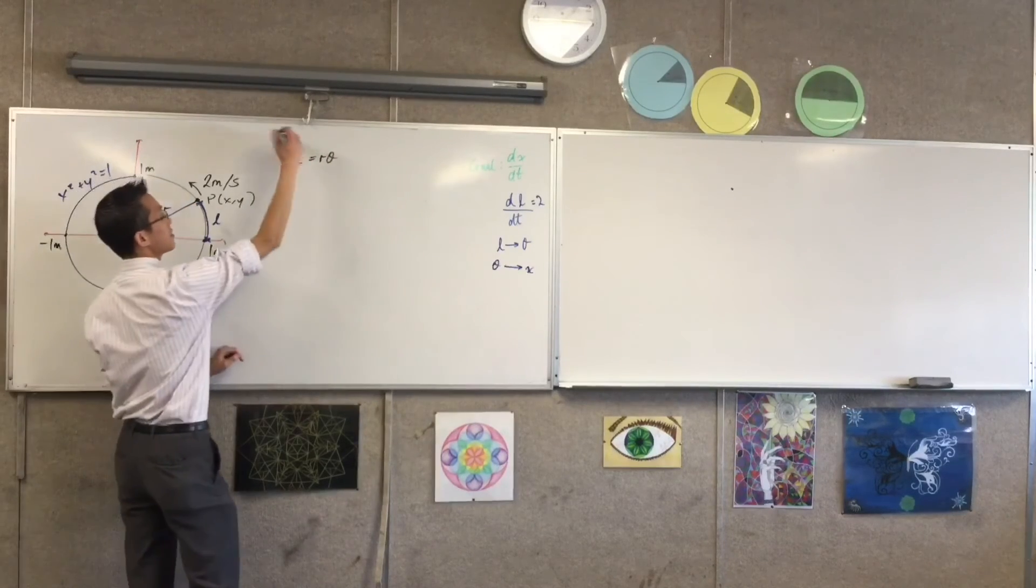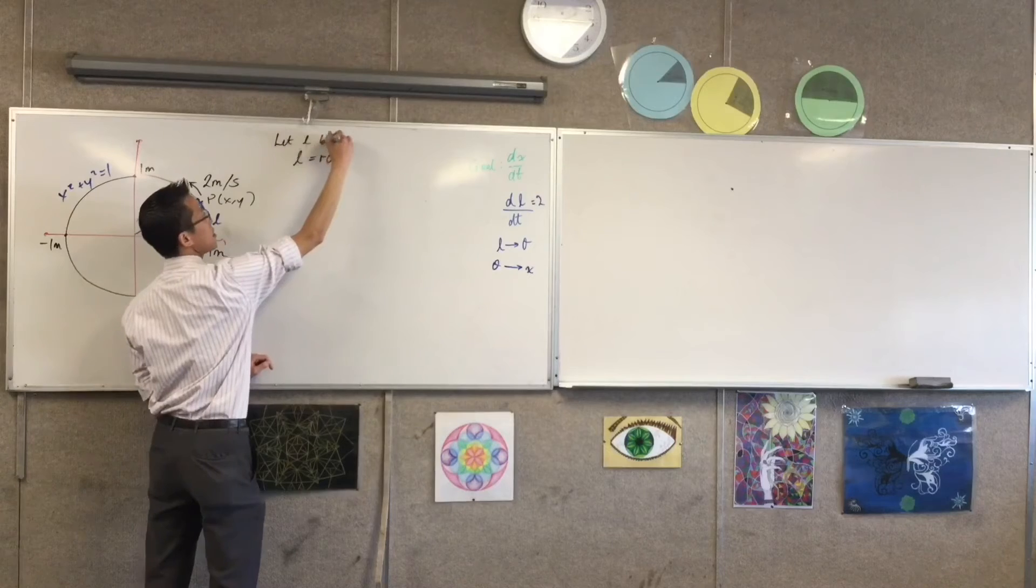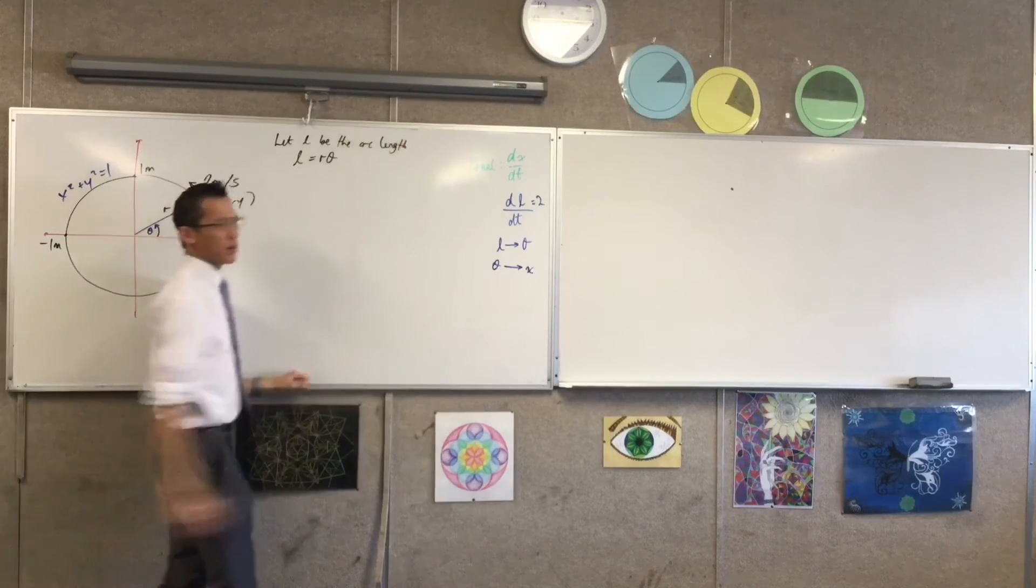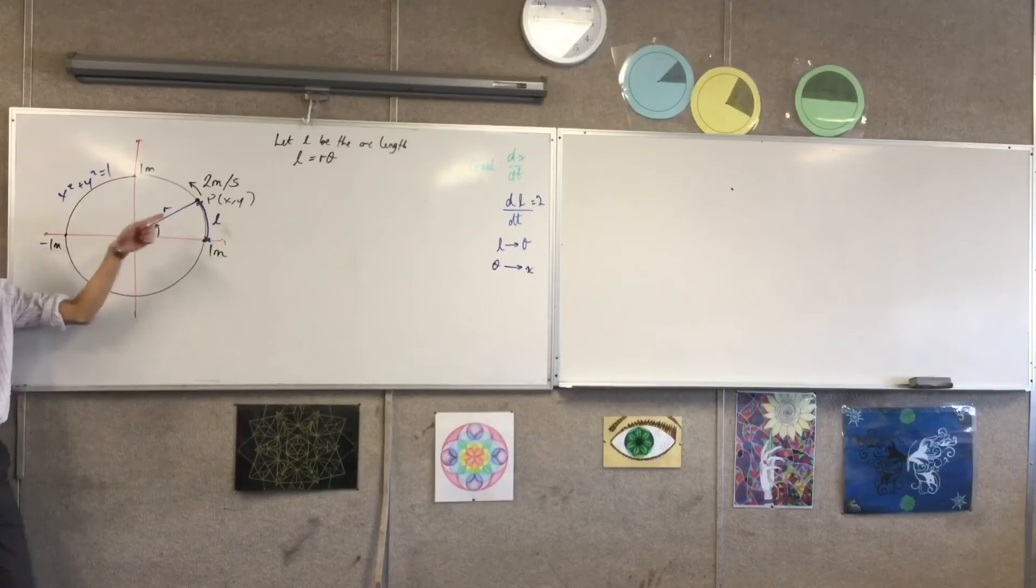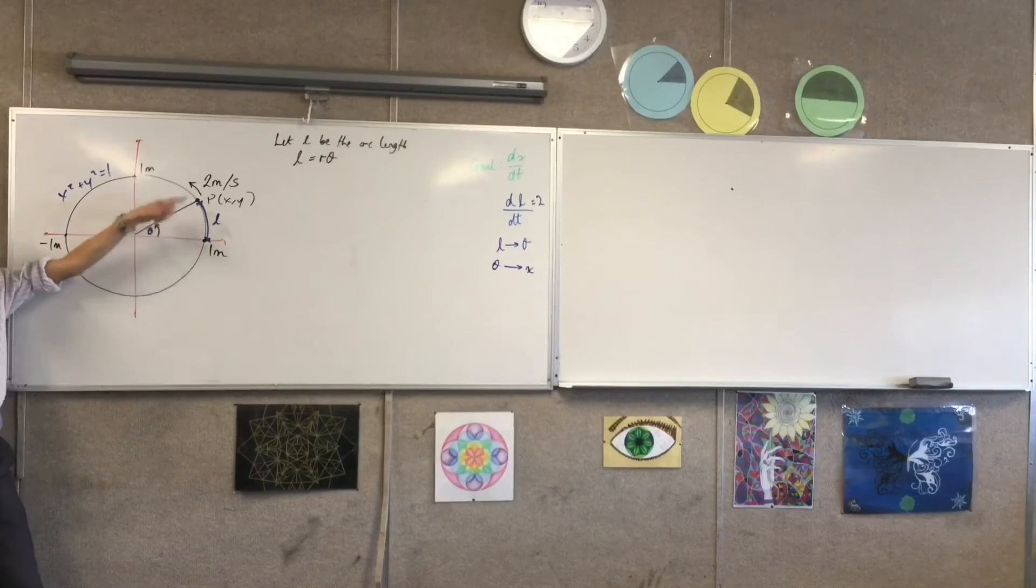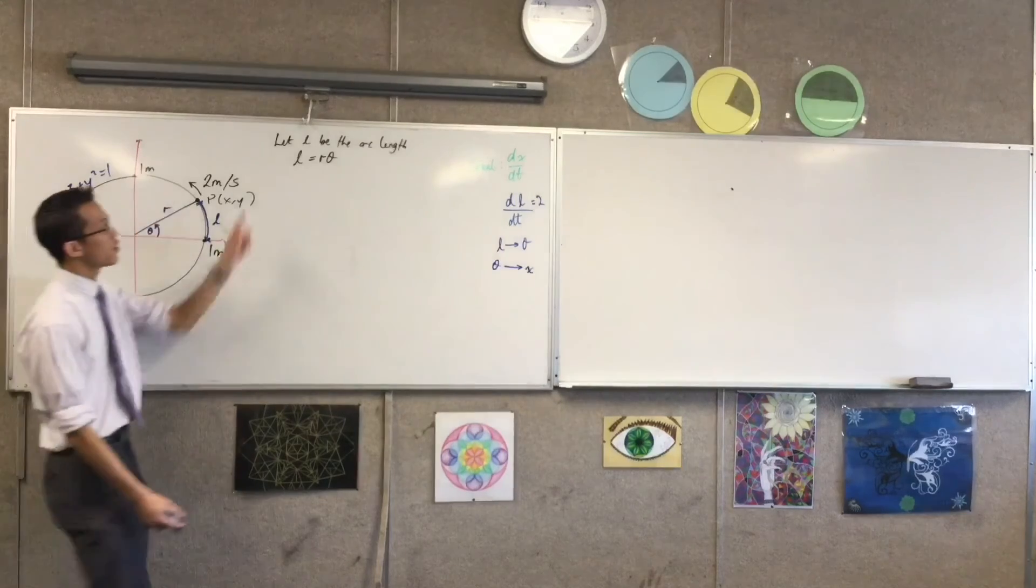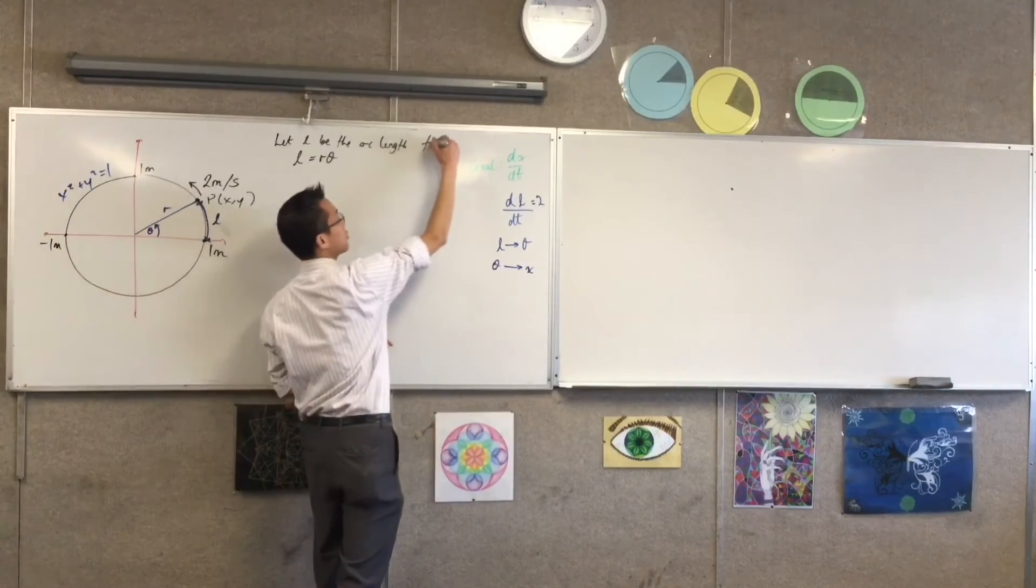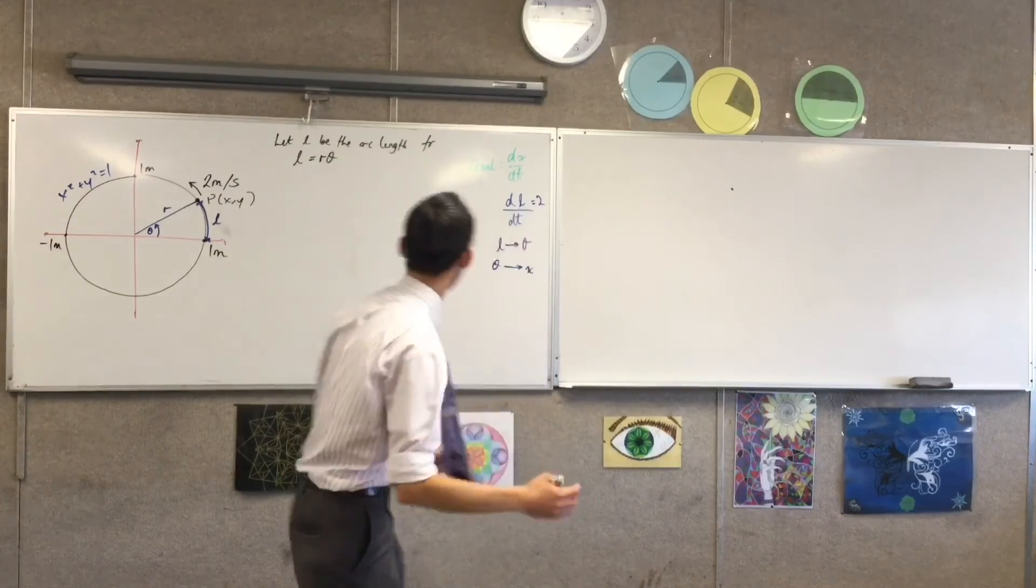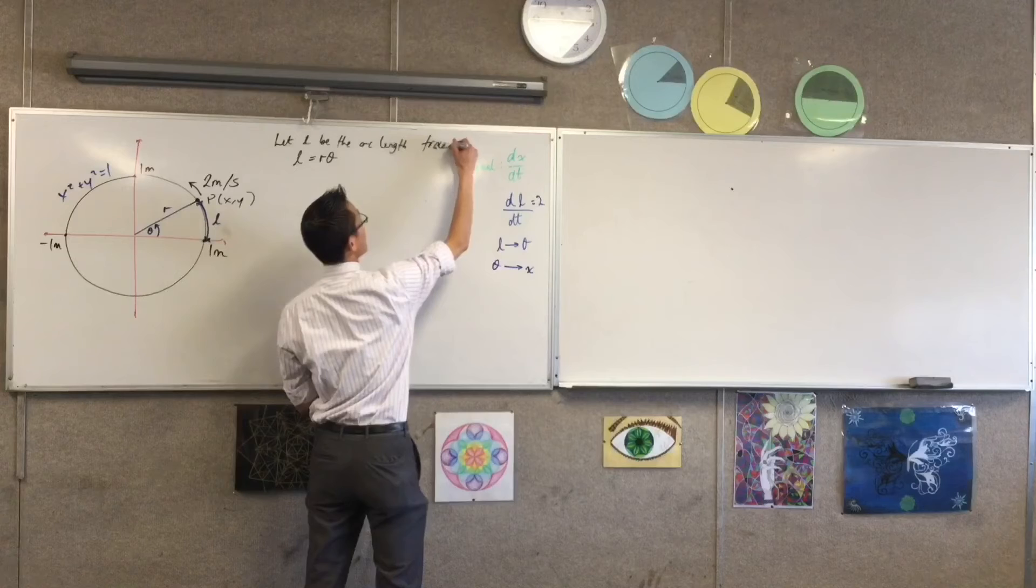let L be the arc length. How would you describe this thing? That length there. I suppose it would be the arc length traced out after some amount of time, right? So, the arc length traced out by the particle. Well, actually, what do they say? What's the word they use? Is it a point? There you go. Traced out by the point.